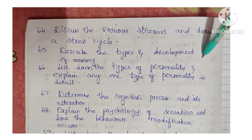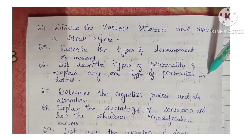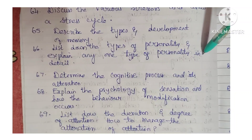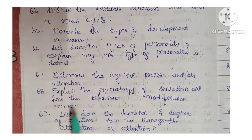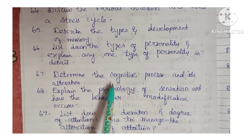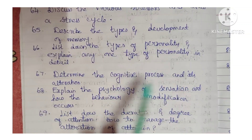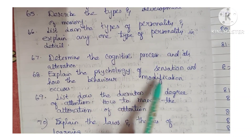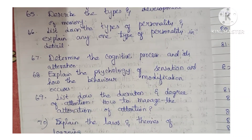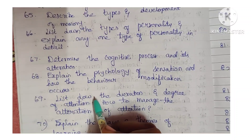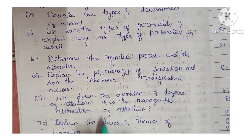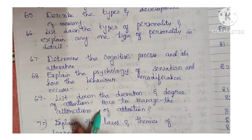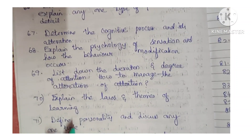Next: describe the types of development and memory. Next: list down the types of personality and explain any one type in detail. Next: determine the cognitive process and its alteration. Next: explain the psychology of sensation and how behavior modification occurs. Next: list down the duration and degree of attention. How to manage the alteration of attention.